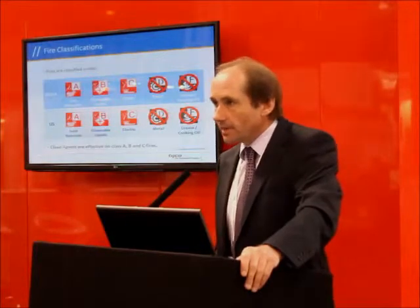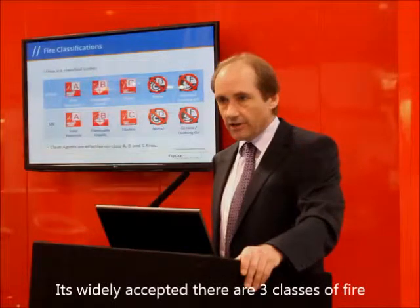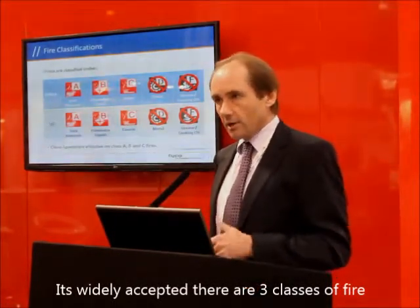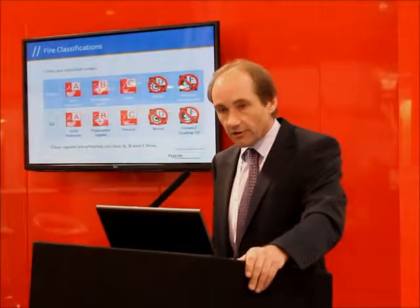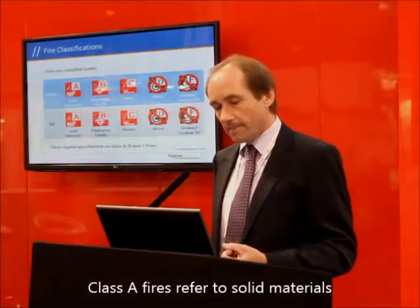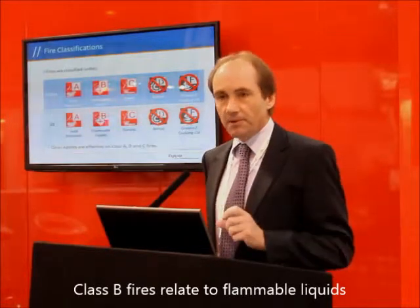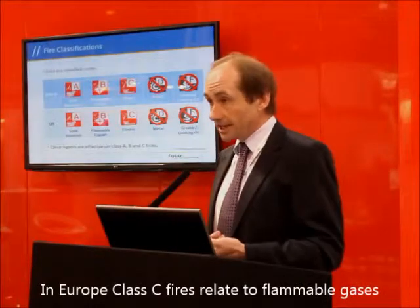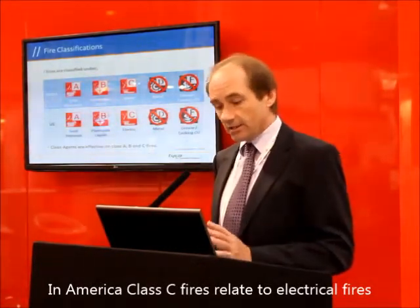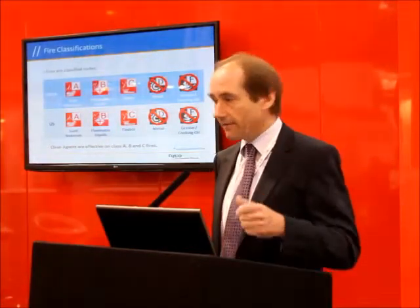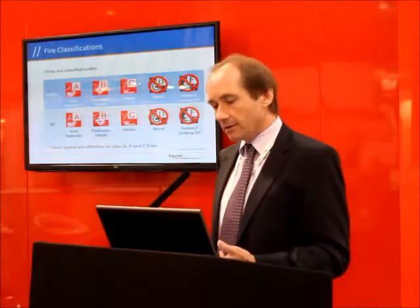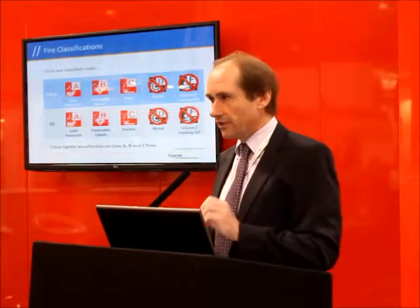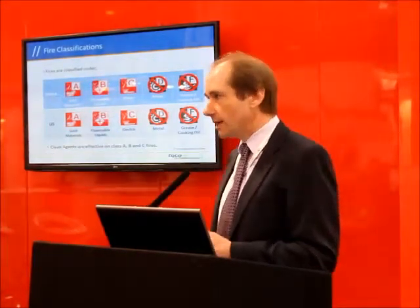Generally, when we look at clean agents and to a large degree with CO2 as well, we're looking at three classes of fires: Class A, B, and C. The terminology differs between the European market and the US. A Class A fire globally is a solid burning fire, Class B is a flammable liquid. Class C in European terminology is flammable gases, whereas in the US it typically refers to energised or electrical type fires. These products typically wouldn't be used on reactive metals, grease, or cooking oil, so you wouldn't see them in kitchen environments or industrial processes with reactive metals.